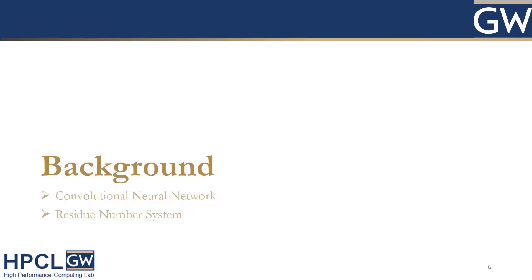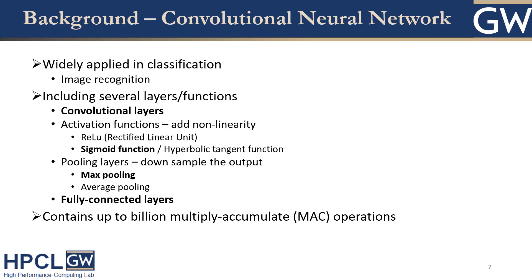Now I would like to talk about the background on convolutional neural networks and the Residue Number System. Convolutional neural networks are widely used in classification, for example image recognition. There are several layers and functions inside a CNN, including convolutional layers, activation functions, pooling layers, and fully connected layers. There could be up to a billion MAC operations, which mainly come from the convolutional layers and the fully connected layers. In our work, we focus on both of these functions and layers only.